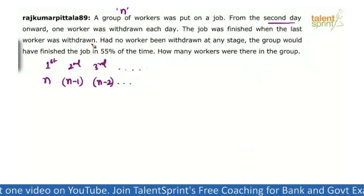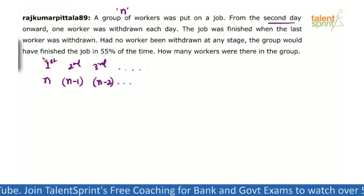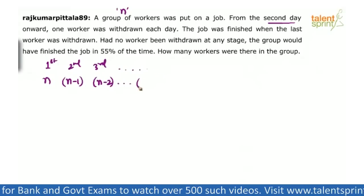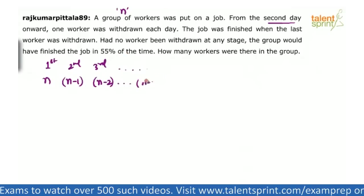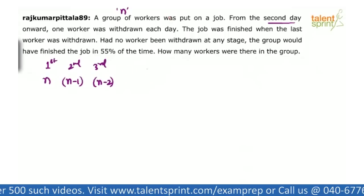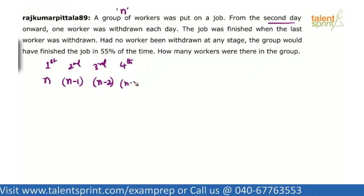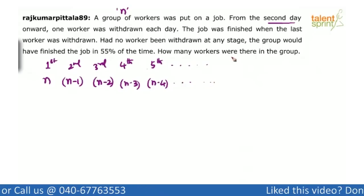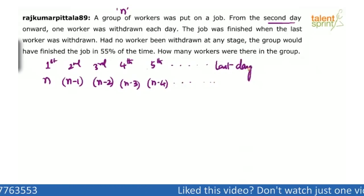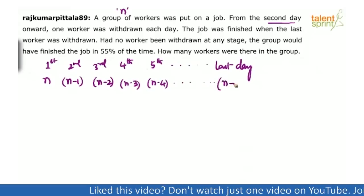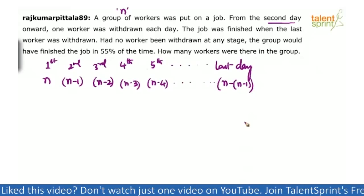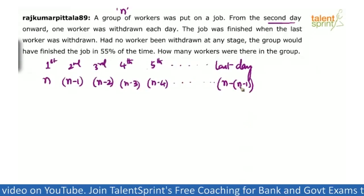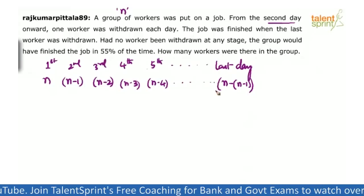The job was finished when the last worker was withdrawn — meaning the work got over when the last worker was withdrawn. This cycle continues, and finally on the last day it will be n minus (n minus 1) workers. Each day one worker was reduced, so the last day has n minus (n minus 1) workers.